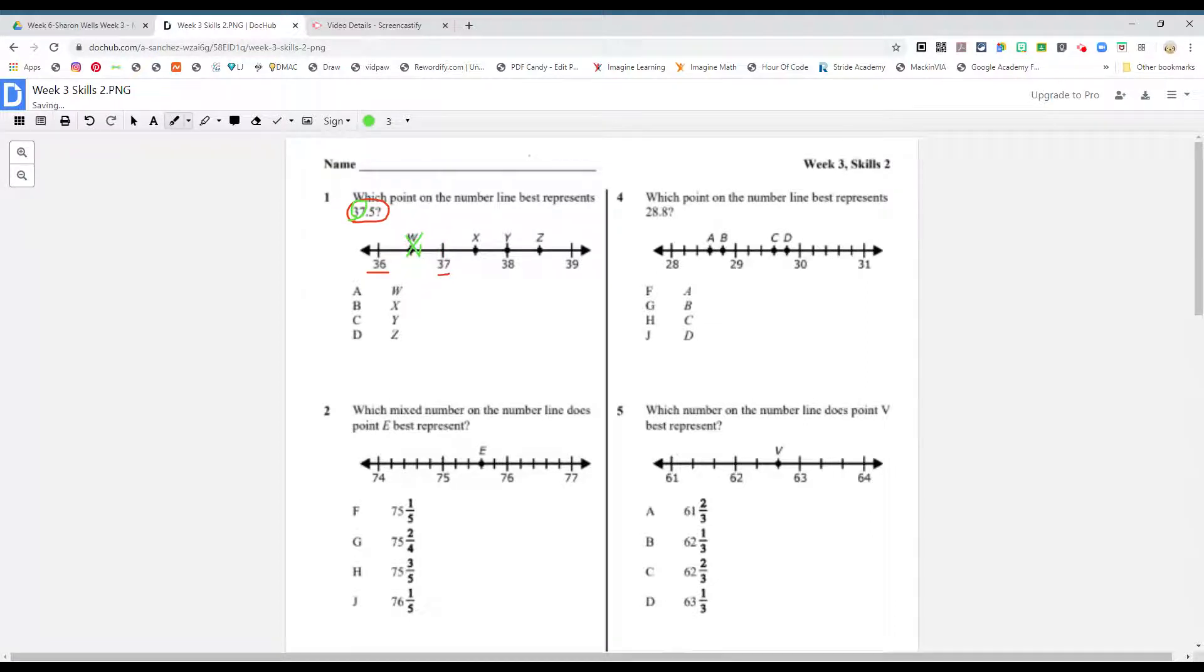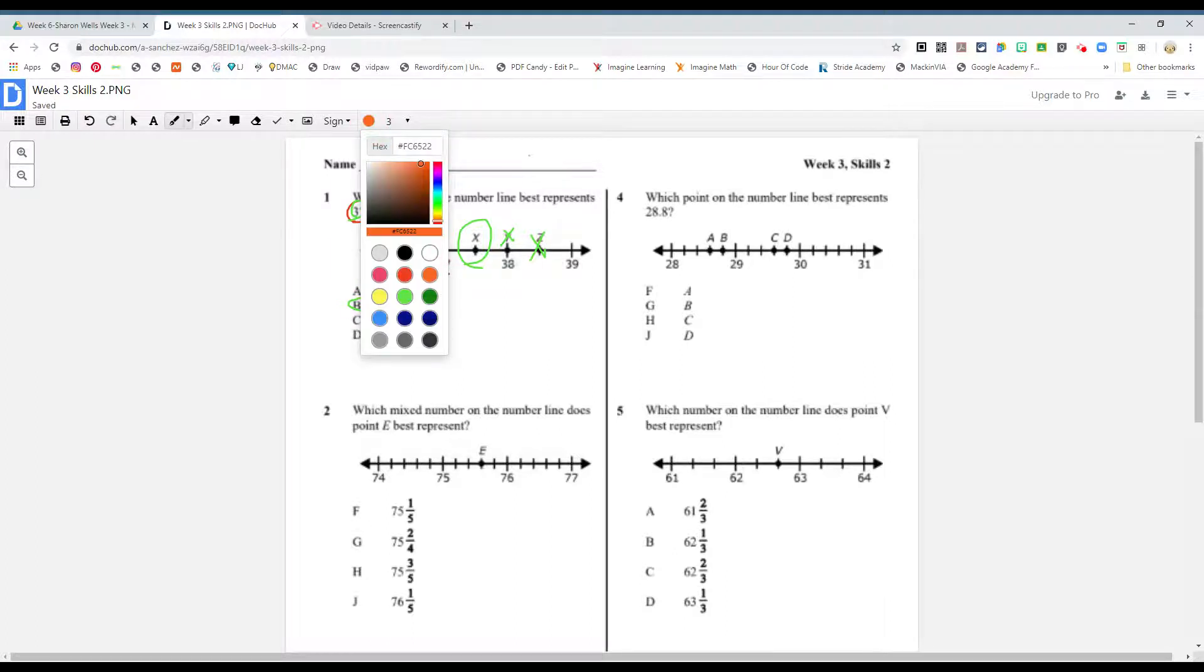So 37 and something. What, boys and girls? Let's start eliminating. This is 36 and something, no. That's a 38 and something, no. That is exactly 38, no. It has to be this one boys and girls, and that is the correct answer, letter B. And boys and girls, since they only have one marking, that is your 0.5. It's halfway.